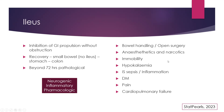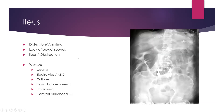Factors influencing ileus include: bowel handling in open surgery (ileus is negligible in laparoscopic surgery), anesthetics and narcotics, immobility, hypokalemia, intra-abdominal sepsis and inflammation, metabolic disorders like diabetes mellitus, pain itself, and cardiopulmonary failure. Ileus can be neurogenic, inflammatory, or pharmacological — the commonest pharmacological agent is narcotic analgesics.